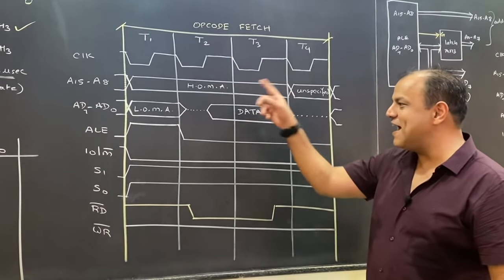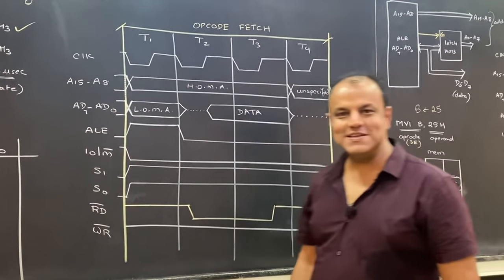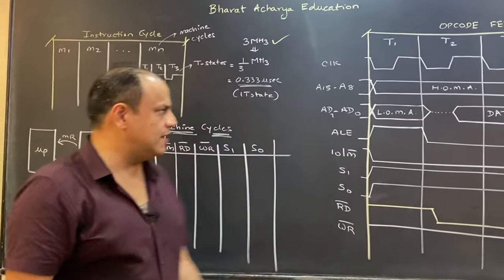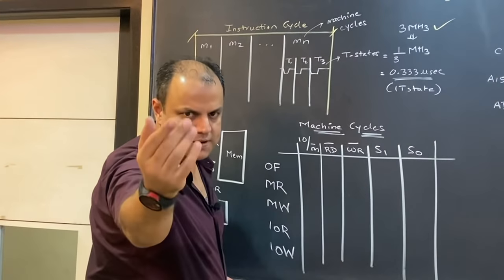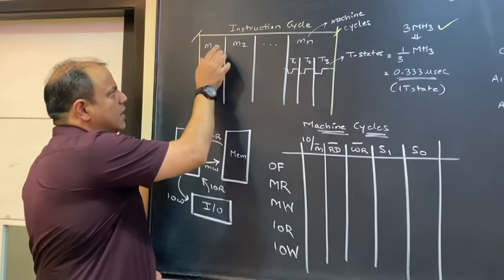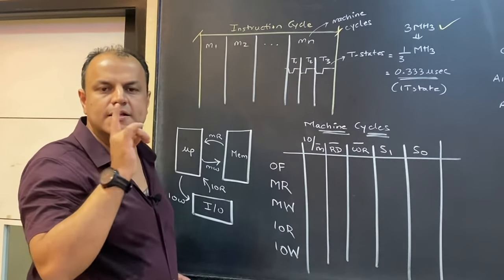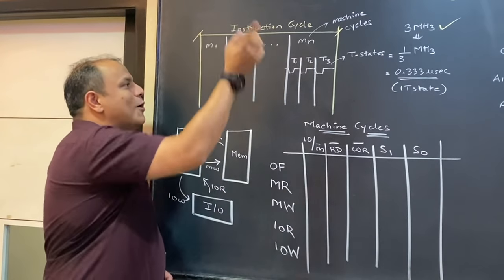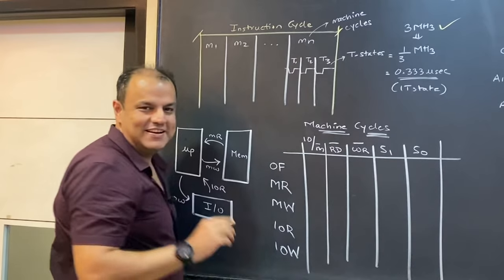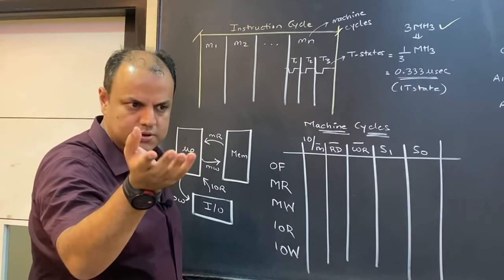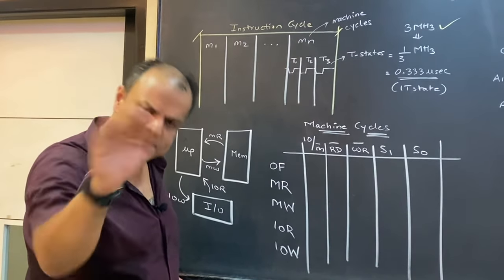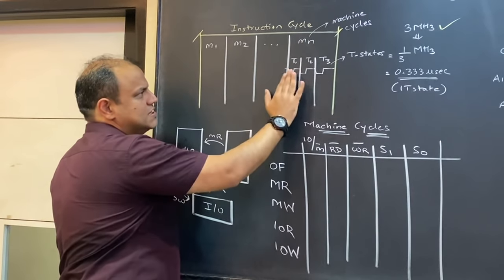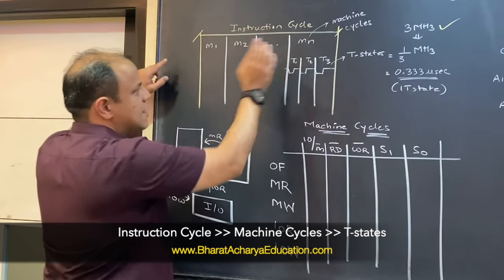हम timing बता रहे हैं activities की — कि इस time पे कौन सा signal किस वक्त high और low होते हैं, उसको बोलते हैं timing diagram। Timing diagram बनाने में एक पूरा instruction cycle बनाते हैं। Instruction cycle के अंदर होते हैं machine cycles — ध्यान से सुनो। Machine cycle के अंदर होते हैं T states — सब समझ में आएगा, पहले शब्दों को देखो।